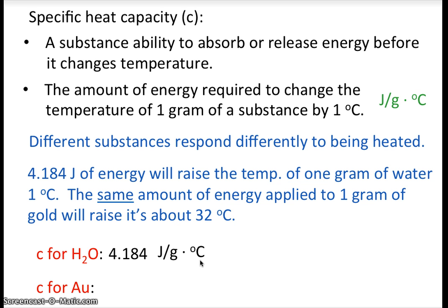And here's the specific heat capacity for gold. It's 0.13 joules per gram degree C. So if we have 1 gram of gold and we want to change the temperature by 1 degree C, we have to add 0.13 joules of energy. Similarly, if we have 1 gram of gold and its temperature decreases by 1 degree C, that means it gave off 0.13 joules of energy.